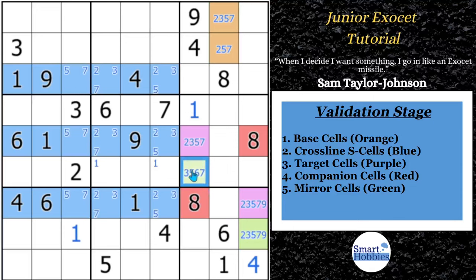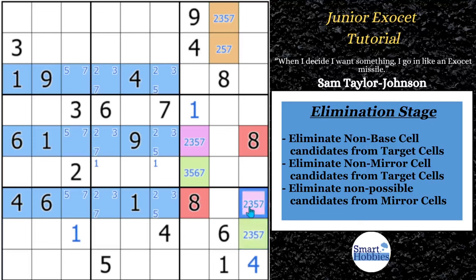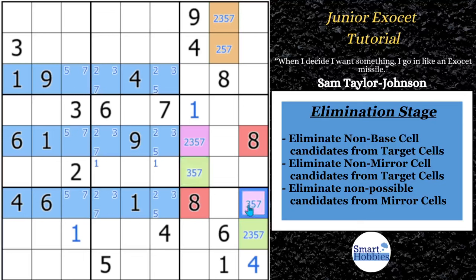We've done the validation — now the elimination stage. First, our target cells can only be two, three, five, seven, so we can eliminate nine from right there. Now looking at our mirror cell: the mirror is two, three, five, seven, so we can eliminate nine from right there as well. Since this is a two, three, five, seven, this cell cannot contain a six anymore — we can eliminate that because it has to match one of these values. You can eliminate the six from right there. And since this can't be a two, and we know this is a mirror of this cell, this cell can no longer be a two. So you can make all of those eliminations.